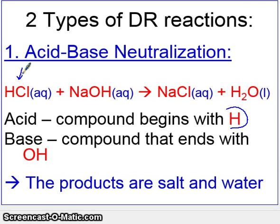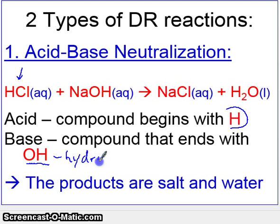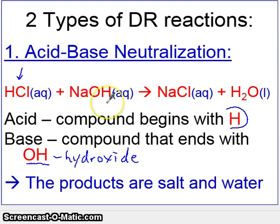A base is a new compound, and a base is a compound that ends with OH, which is the hydroxide polyatomic ion — a very important polyatomic ion. Any time you put an acid with a base, what happens is you get two products: salt and water. This is also a pretty famous reaction.